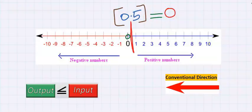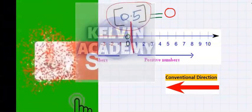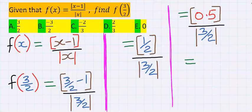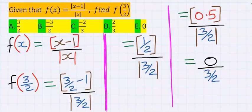That is, everything here becomes 0. Hence, everything at the numerator becomes 0. At the denominator, absolute value rejects negative. However, 3 over 2 has no negative. Hence, 3 over 2 will just return without the absolute value.